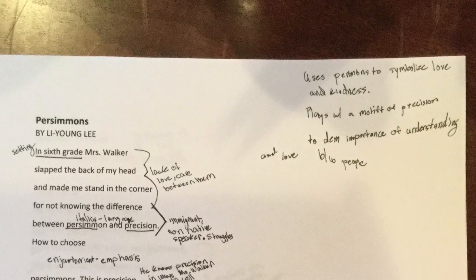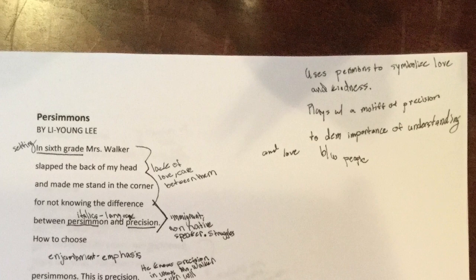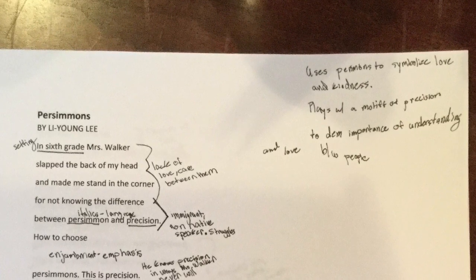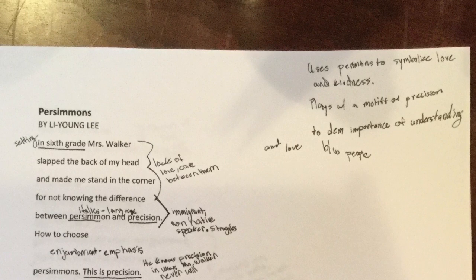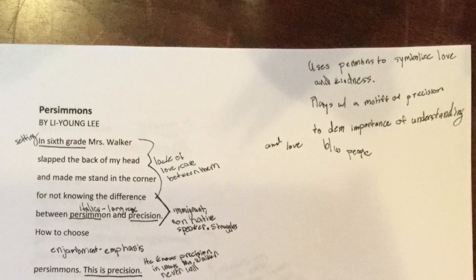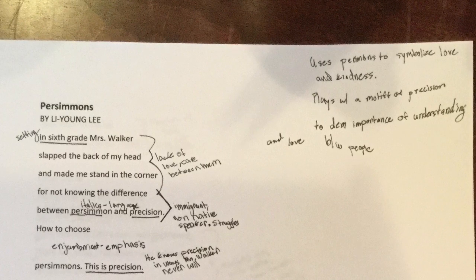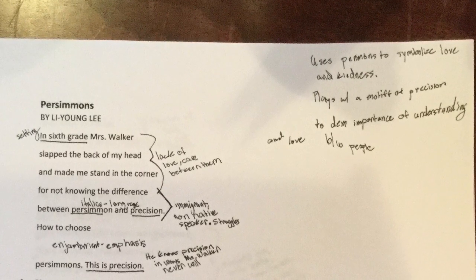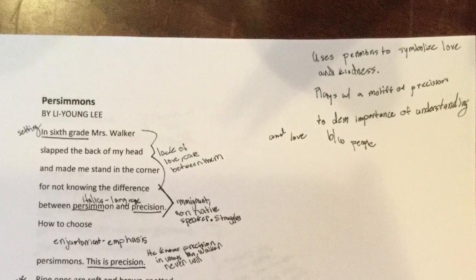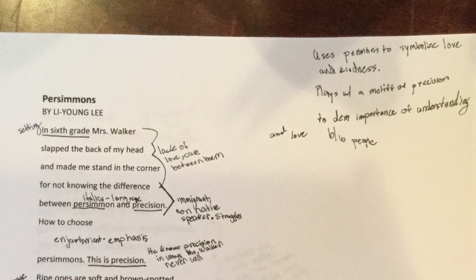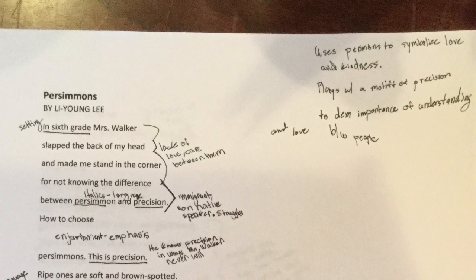"Persimmons" by Li-Young Lee recounts various experiences in which Lee encounters family members or other people who may not have as close a relationship to him, and he has a sort of impossibility with language. The authorial intentions of this poem are to show that these discrepancies in relationships can be overcome through mutual love and appreciation. He uses persimmons to symbolize this love and kindness while also playing with a motif of precision, demonstrating the importance of understanding between people. This is actually one of my favorite Li-Young Lee poems because of the way he is able to knit together a masterpiece in telling the story of the impossibility of language.